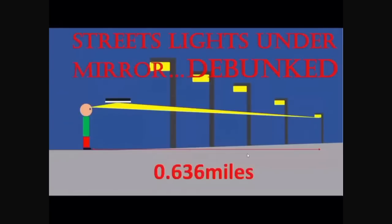This particular flat earther called Talk the Lion tried the same thing, but ended up admitting this didn't work and debunked himself. He had a level mirror and he could not see the street lights in it. He said sorry, he was wrong.